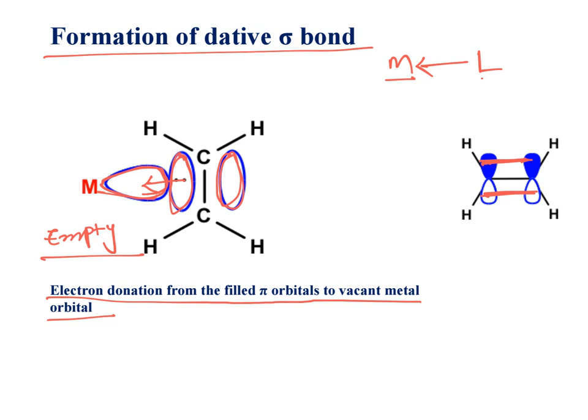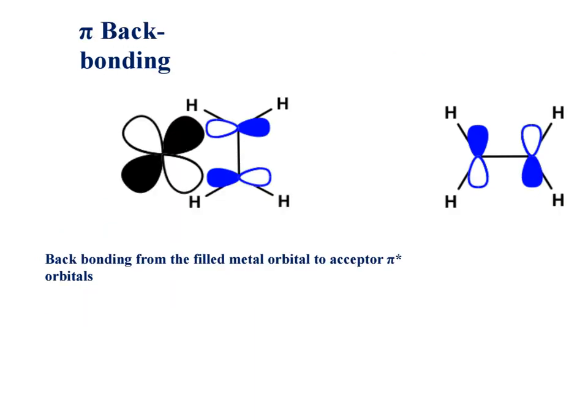How the backbonding is taking place in metal alkene systems. In the previous case, we have seen ligand donated to metal.